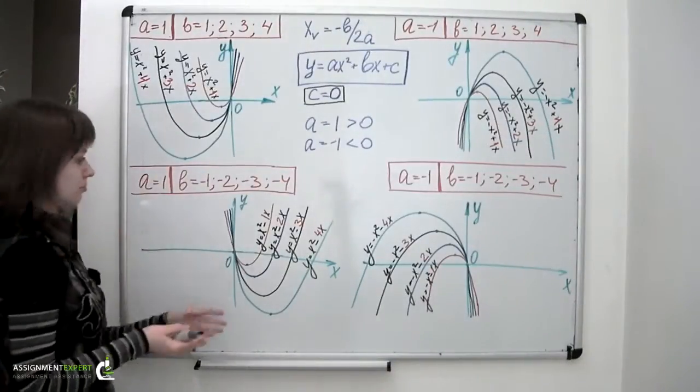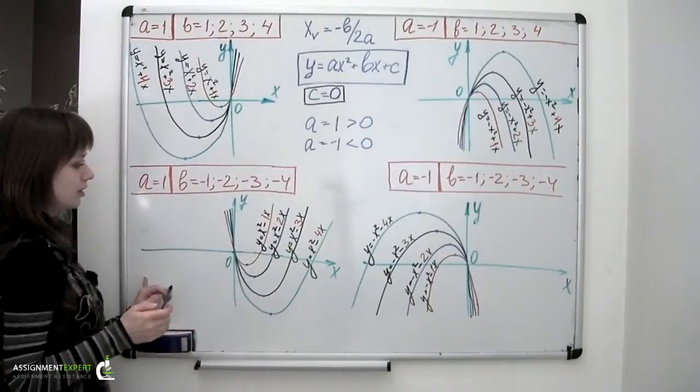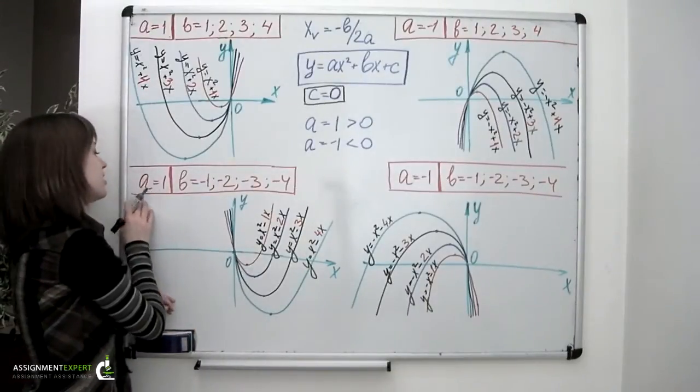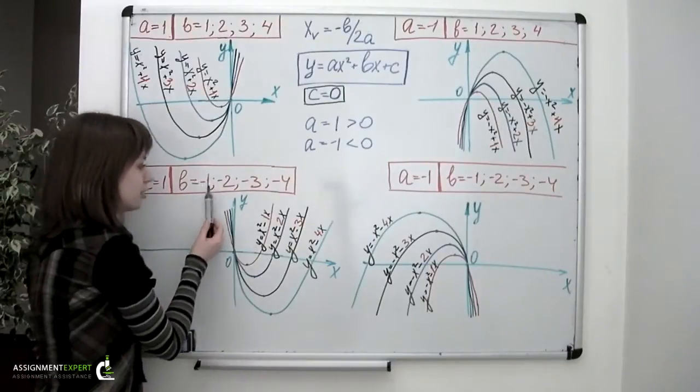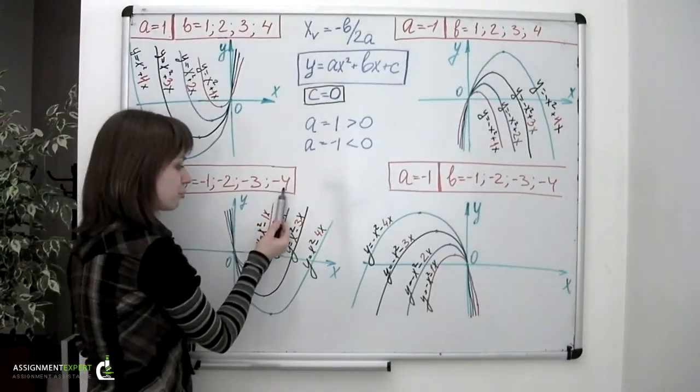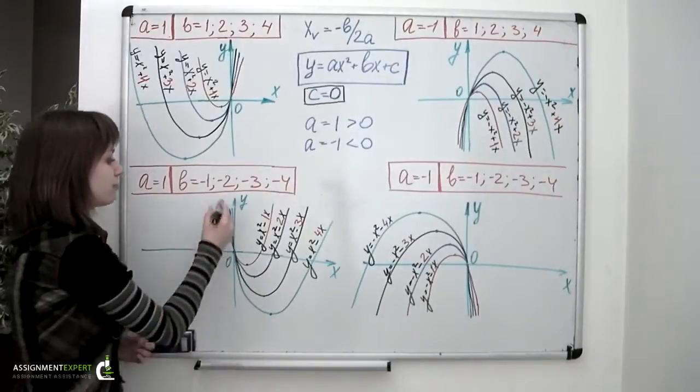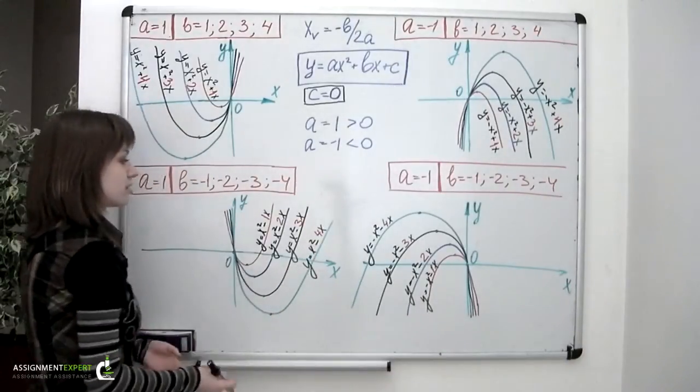Next case, moving down. We still have a equal to 1. But this time we have b set to the values of negative 1, negative 2, negative 3 and negative 4. So again, we have 4 parabolas, all of them being directed upwards.